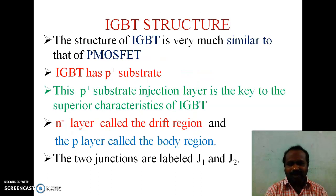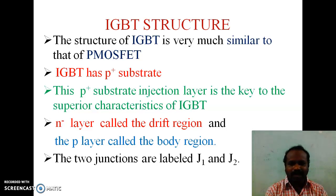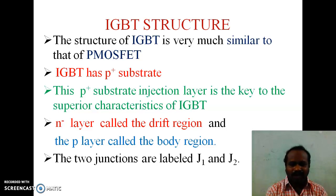The structure of IGBT is very much similar to that of the power MOSFET. IGBT has a P-plus substrate; this P-plus substrate injection layer is the key to the superior characteristics of IGBT. The N-minus layer is called the drift region, and the P-layer above the N-minus layer is called the body region. It has two junctions, namely J1 and J2.